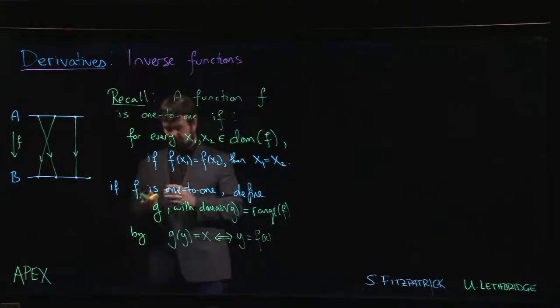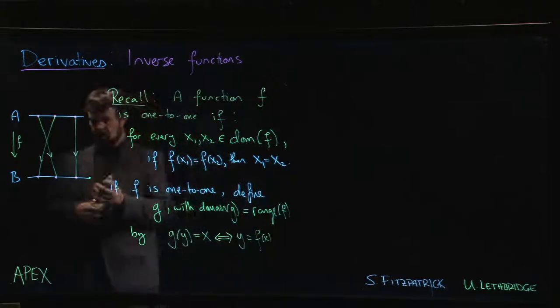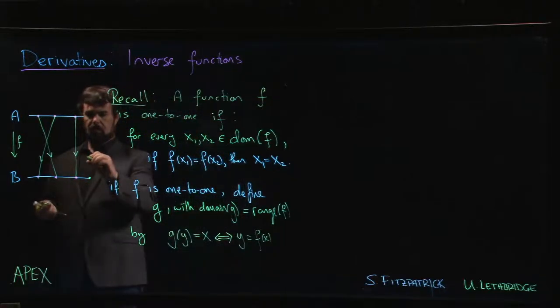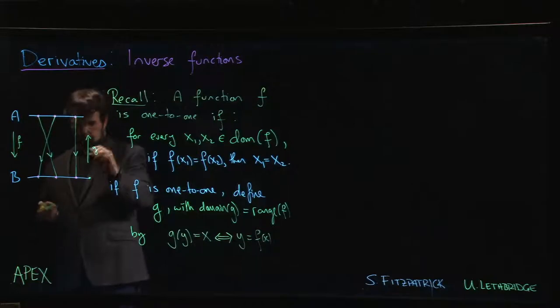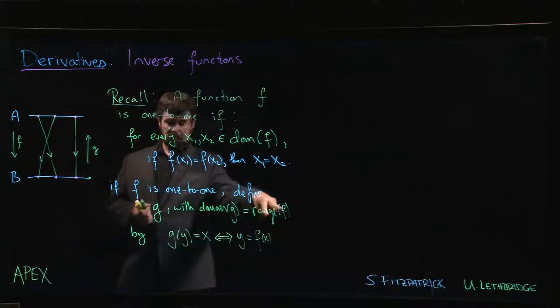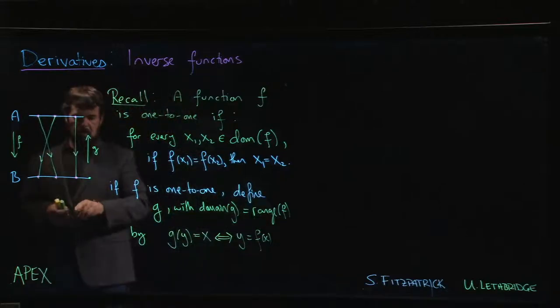The roles of x and y get reversed, so g here is going the other way. The reason we define the domain to be the range is we don't want to have a situation where there's this extra point here that doesn't go anywhere. We don't want g to be undefined at some point, so we get rid of that.